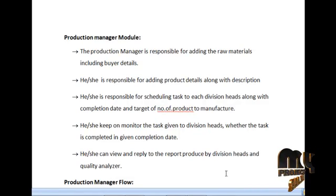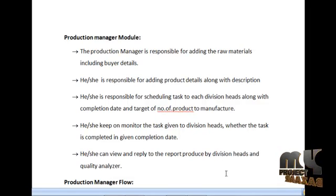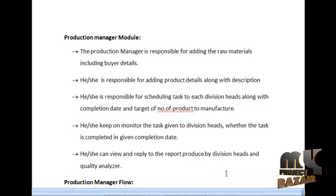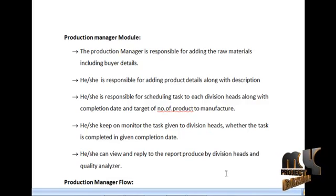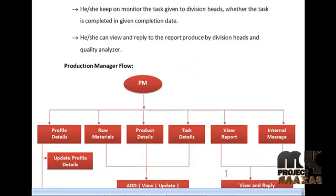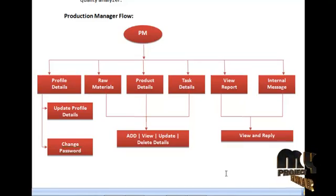The next module is the Production Manager module. The Production Manager is responsible for adding raw materials including buyer details, adding product details along with their descriptions, and scheduling tasks to each Division Head along with the completion date and target number of products to manufacture. The Production Manager is also responsible for monitoring whether tasks are completed by the given completion date, and can view or reply to the Division Head and Quality Analyzer. The data flow diagram for the Production Manager is shown below.